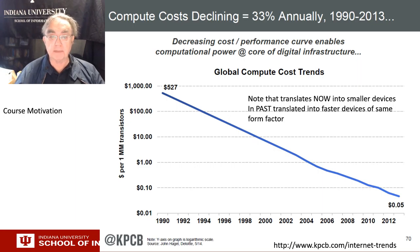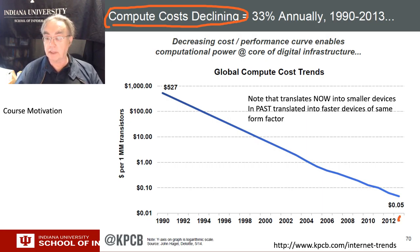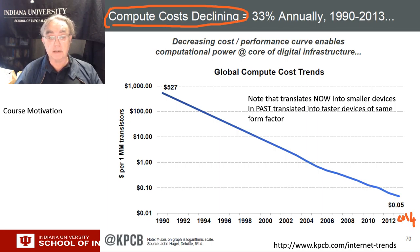Here is the famous Moore's Law curve — the cost of computing as a function of time, which is decreasing exponentially. It shows over this period from 1990 to around 2014, a factor of 10,000 decrease.